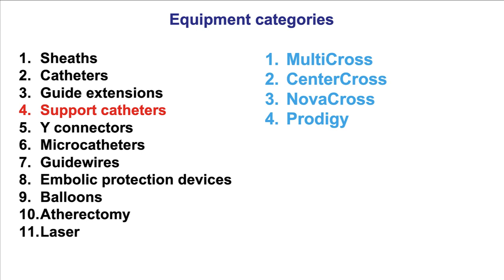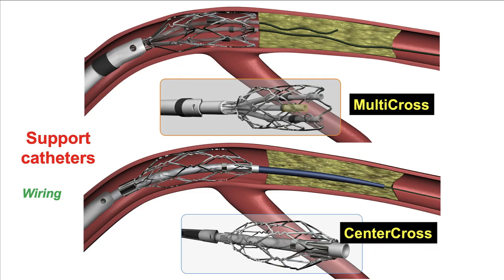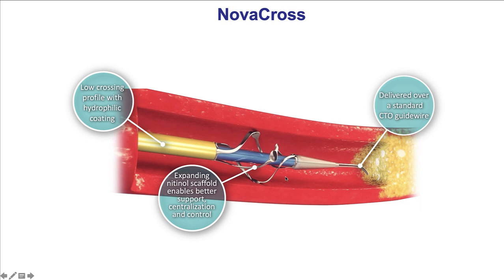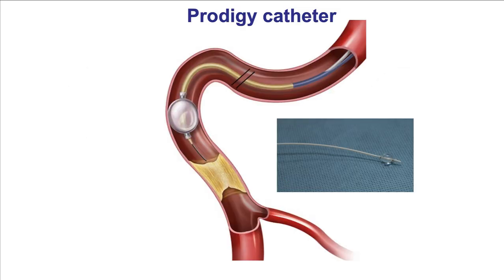Category number four are support catheters. There are four of them: the MultiCross, CenterCross, NovaCross, and Prodigy. These are mainly used for CTO PCI to increase support. For example, the MultiCross has a nitinol mesh that goes against the wall of the vessel, providing support for wire advancement. The CenterCross does the same thing but for a microcatheter. There is also the NovaCross and the Prodigy catheter, which has a low-pressure balloon.